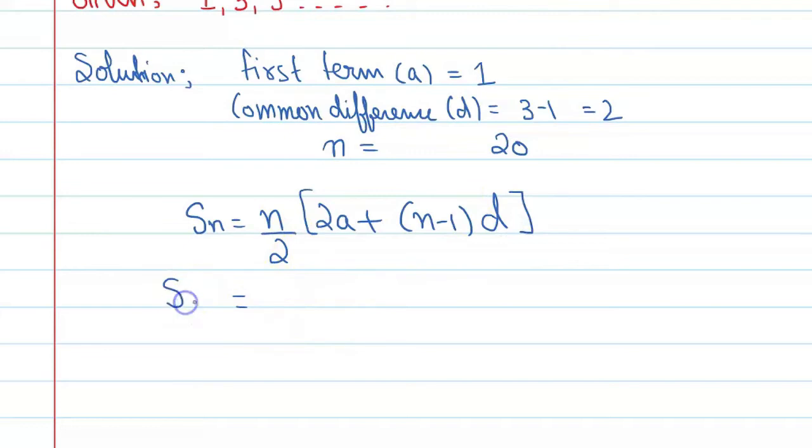We will get S20 equal to 20 upon 2, 2 into 1 plus 20 minus 1 into d is 2. Alright, here you will get 10. It is 2 plus, sorry, 19, 19 into 2.